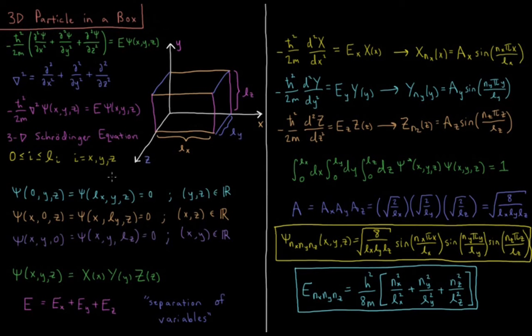So when we do this, we have a Hamiltonian in the x, y, and z direction, and our equation separates out into three separate Schrodinger equations, one for each dimension.